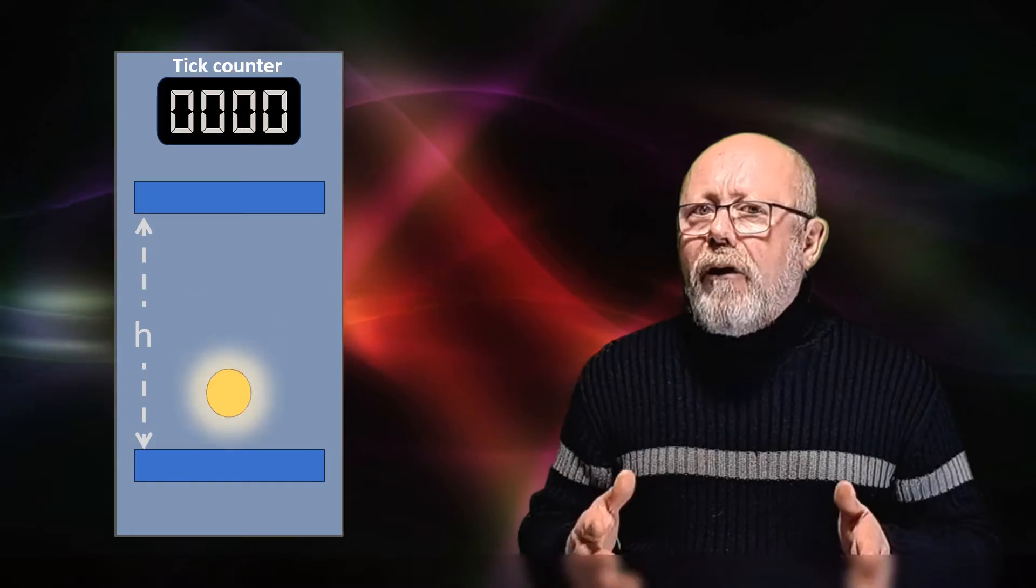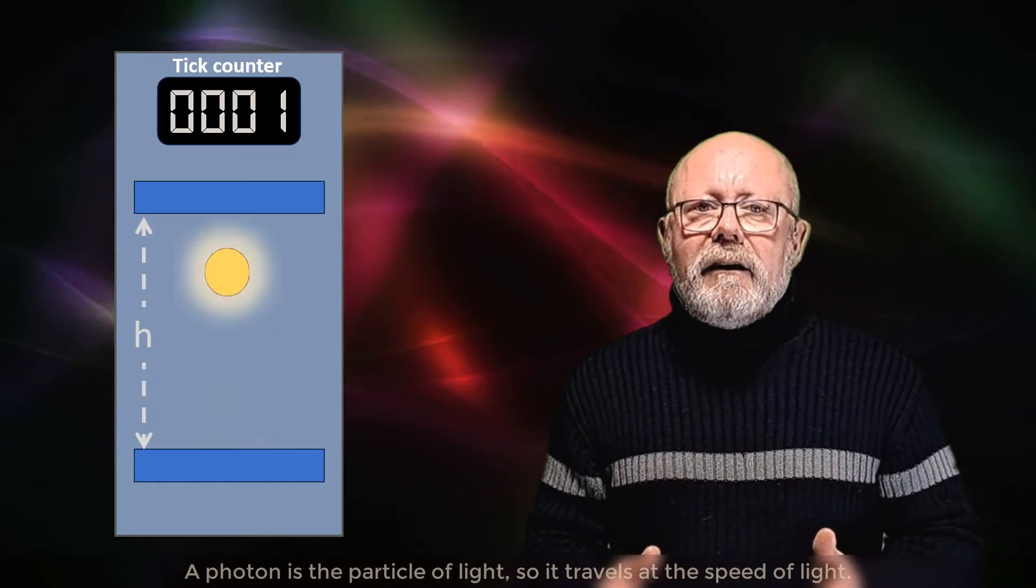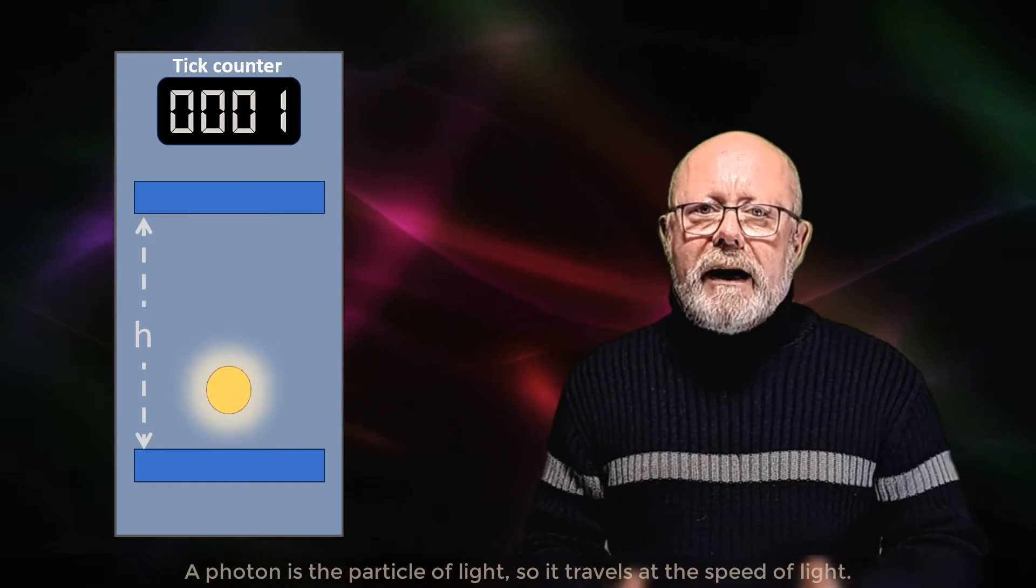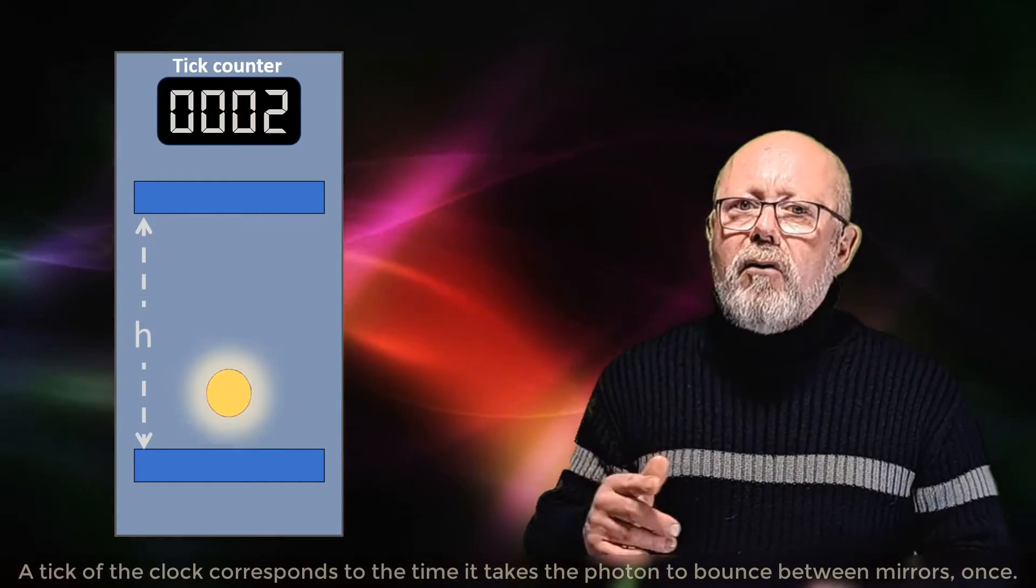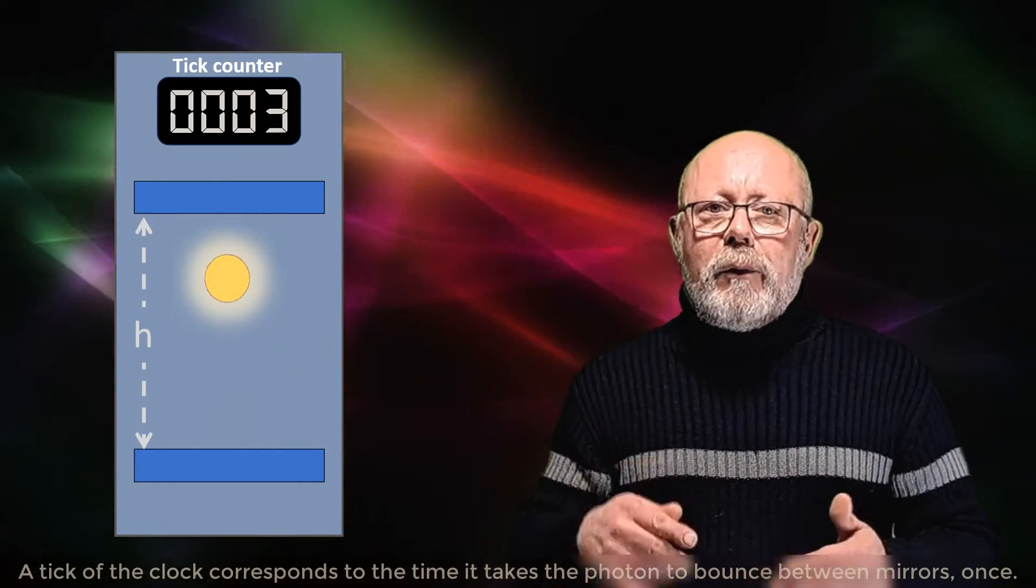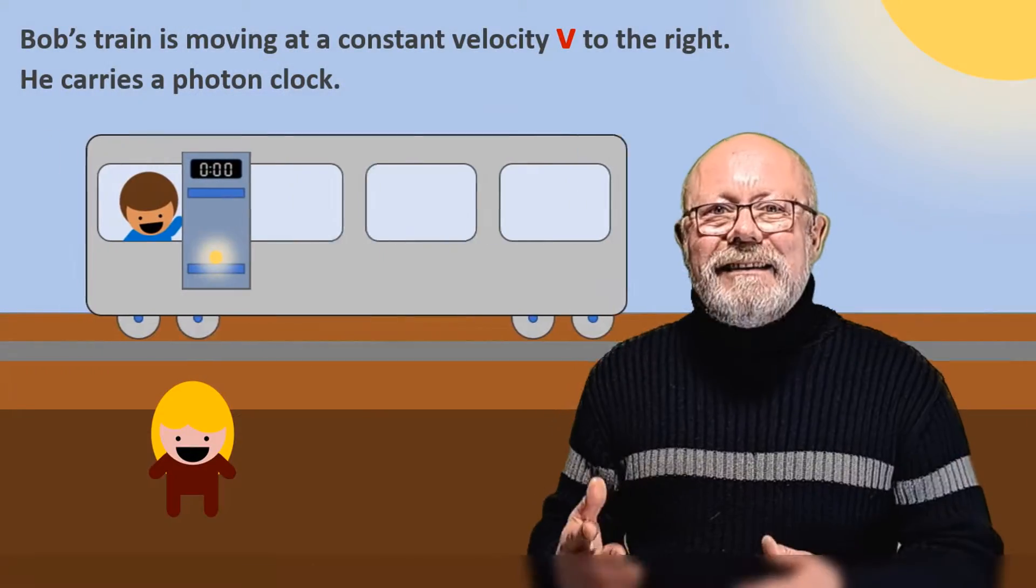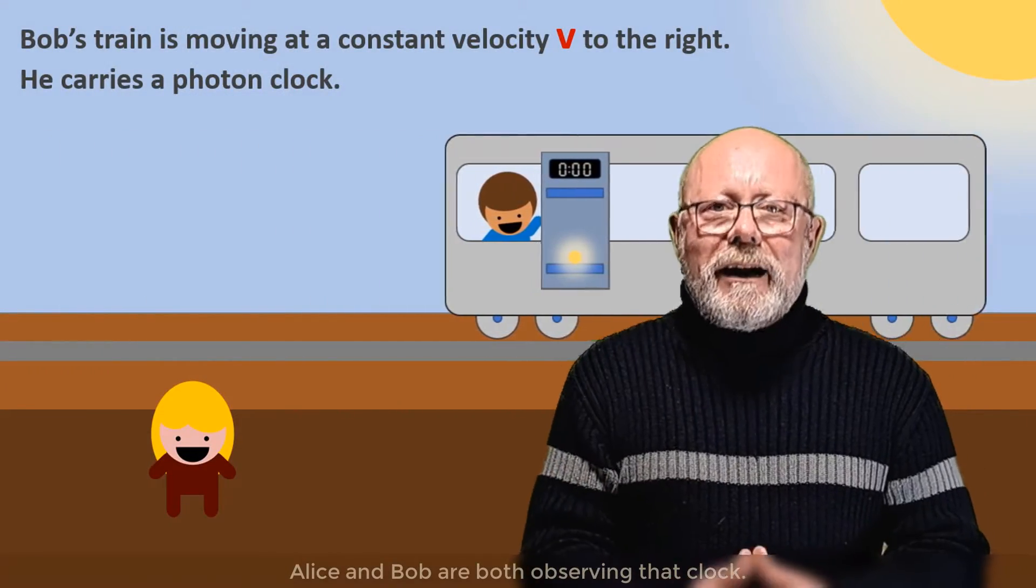A photon clock consists of two mirrors separated by a known distance H. In between the mirrors bounces back and forth a photon. The photon is the particle of light, so it travels at the speed of light. One tick of the clock corresponds to the time it takes for the photon to bounce back and forth between the mirrors once.